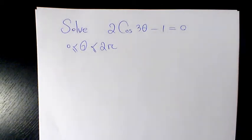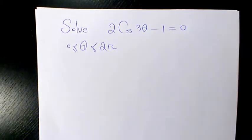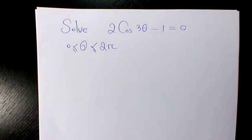What's up guys, this is Massey, welcome to another video. In this video I want to show you how to solve this trigonometric equation which is 2 cosine 3 theta minus 1 equals 0 and we need to solve